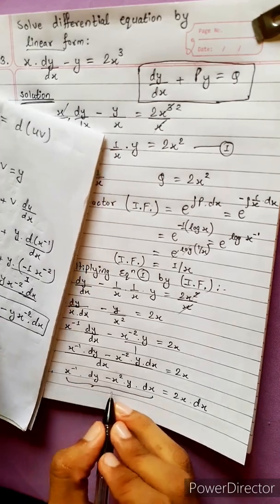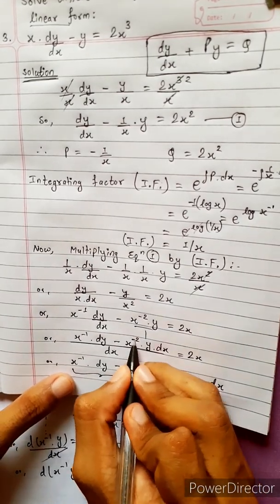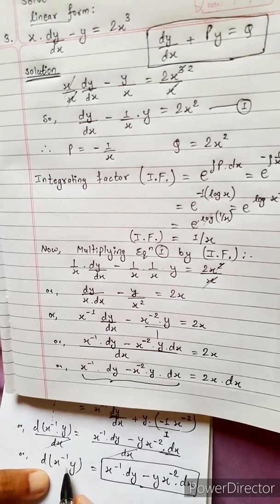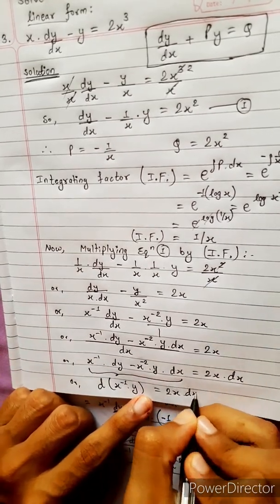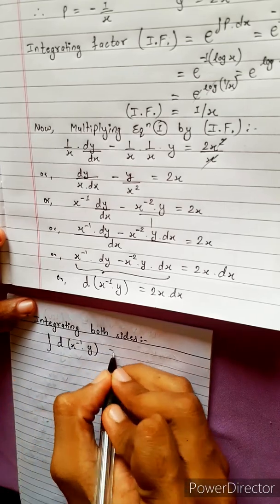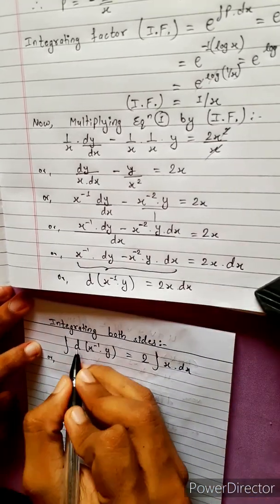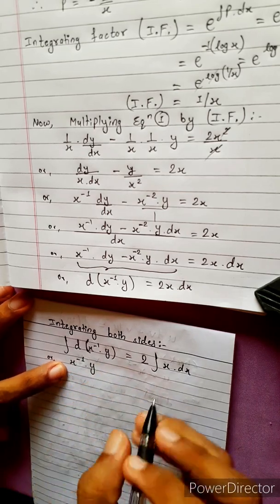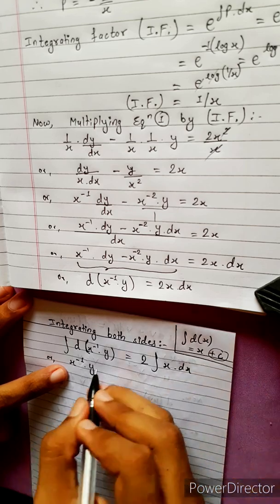The left-hand side becomes d(x⁻¹ · y) or d(x inverse · y) equals 2x dx. Now let's integrate both sides: integrating d(x inverse · y) equals the integral of 2x dx.